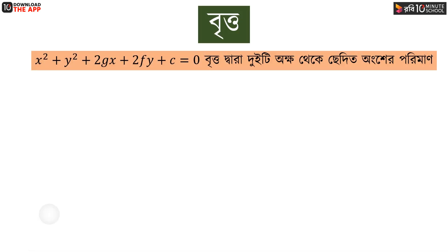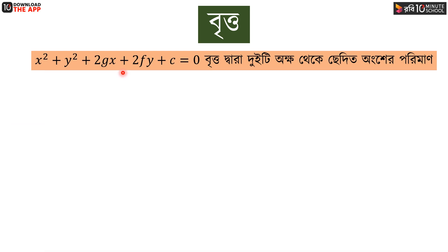We are interested in the general equation of a circle: x squared plus y squared plus 2gx plus 2fy plus c equal to 0.